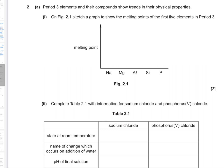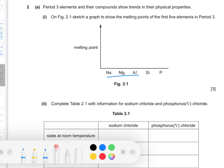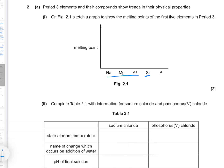Question 2a: On Figure 2.1, sketch a graph to show the melting points of the first five elements in Period 3. The first three elements — sodium, magnesium, and aluminium — are metals and their melting points increase across the period. Silicon has the highest melting point in Period 3. Then phosphorus, being a non-metal, has a lower melting point than even sodium.